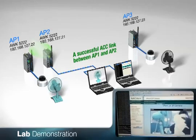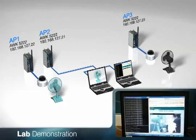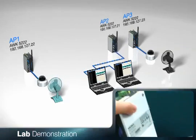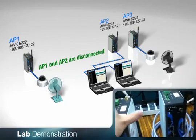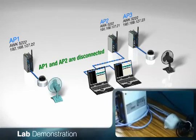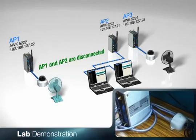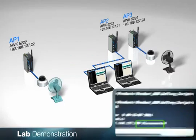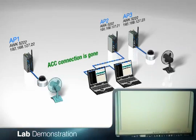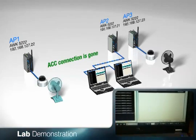We are connected to the webcam through the ACC link between AP1 and AP2. To trigger the disconnection process, let's remove the antennas of AP1, weakening its signal level. Once the signal level between the two APs drops below 50 dBm for over 60 seconds, ACC will confirm that AP1 and AP2 are disconnected. We can verify that the two APs are no longer linked on the connection checker script. Also, the image of the green fan is gone because we are no longer connected to that webcam.